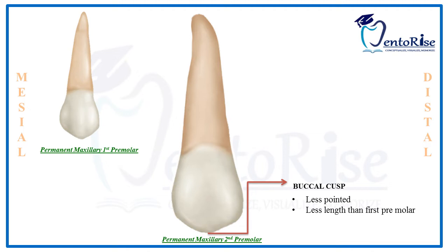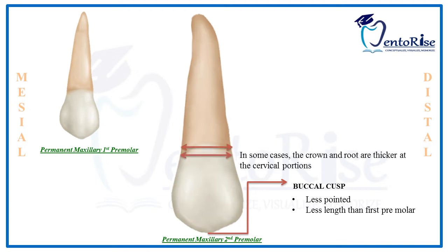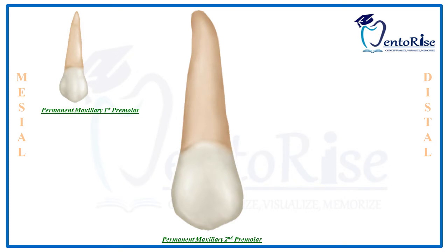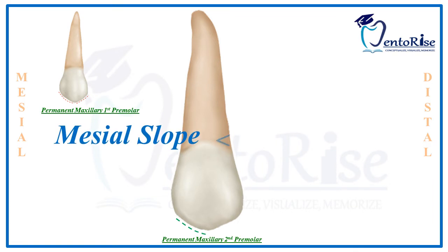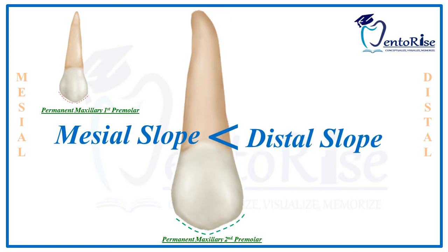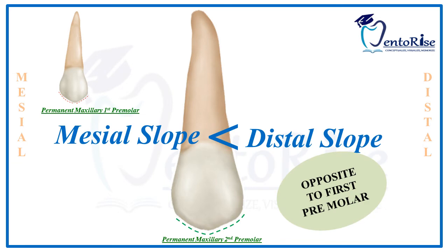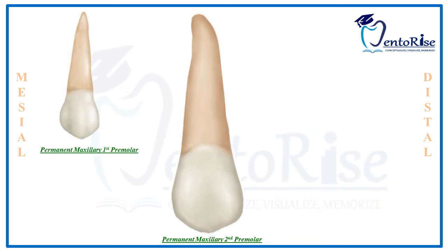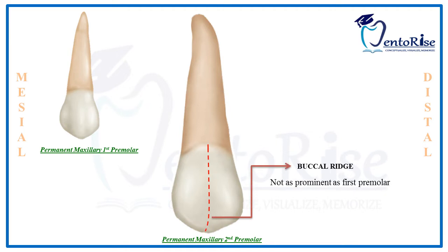Also, the buccal cusp of this tooth has less length than the first premolar. In some cases, the crown and the root are thicker at the cervical portions. Now, coming to the most important and key feature: in a permanent maxillary first premolar, the mesial slope is greater in dimension than the distal slope. However, this is completely opposite in a permanent maxillary second premolar, wherein the mesial slope is shorter in dimension than the distal slope. Also, the buccal ridge in a permanent maxillary second premolar is not as prominent as that of a permanent maxillary first premolar.